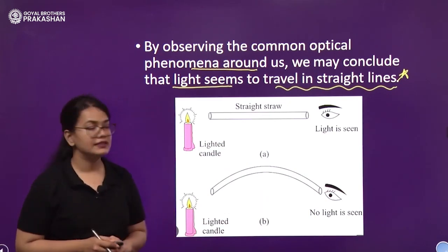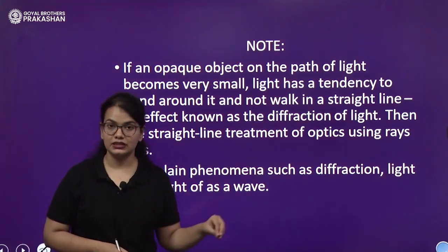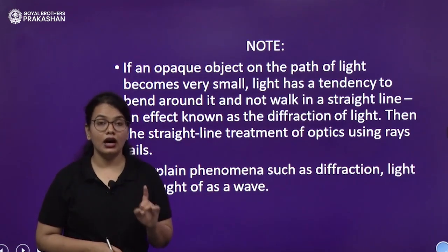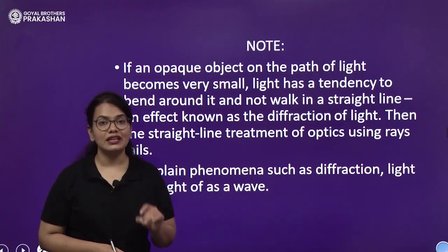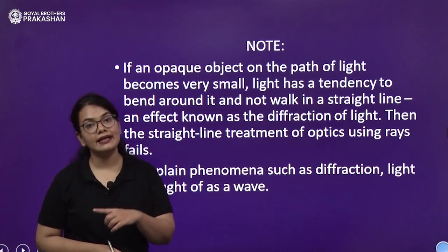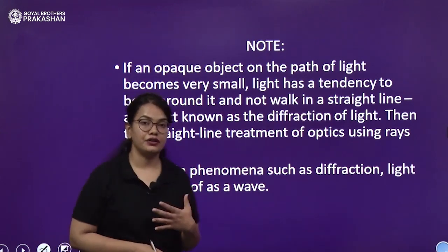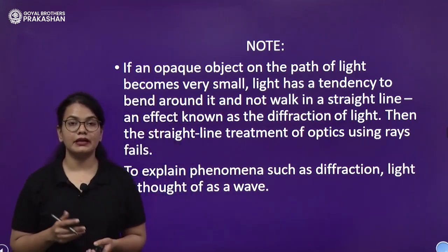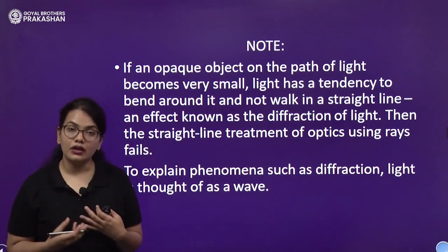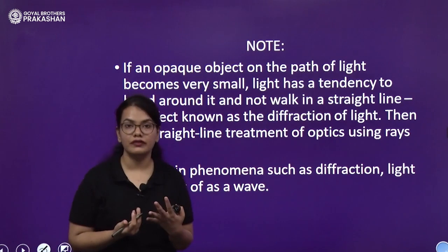However, there is an important note. In all the discussion in this chapter we will treat light as traveling in a straight path, but when you go to higher classes you will study phenomena such as diffraction, where light is seen to bend around the corners of an obstacle. As science progressed, various experiments showed that light does bend, but those are very special cases. Diffraction is not a very common phenomenon.